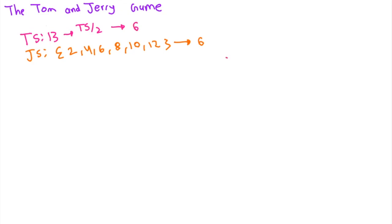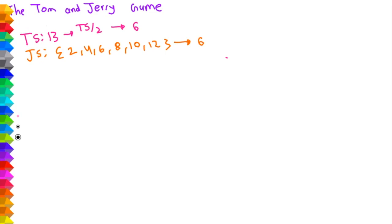Now let's look at an example where TS is even. In this case, we would divide this value by 2 and proceed to the next turn, because TS has to be an odd number in order for Jerry to win. We can keep dividing TS by 2 until it is an odd number. For example, let's look at the case where TS equals 52. We can divide it by 2 once to get 26, and then divide by 2 once more to get 13.